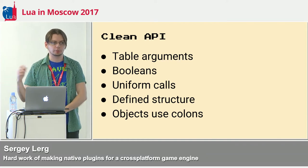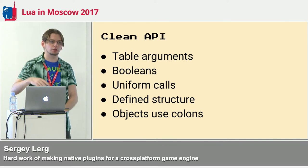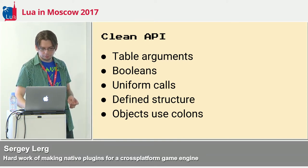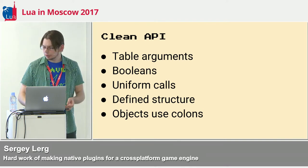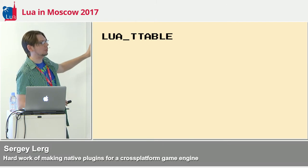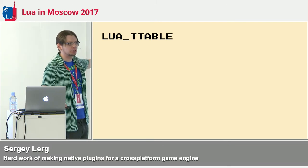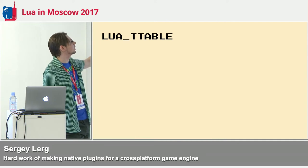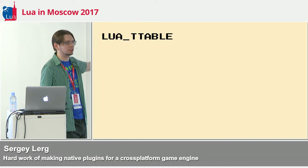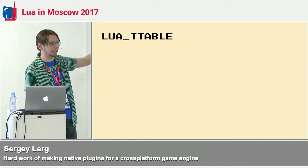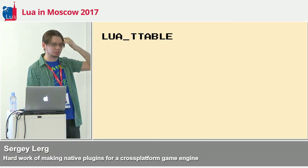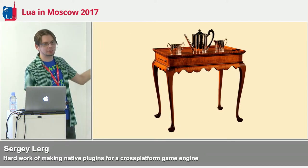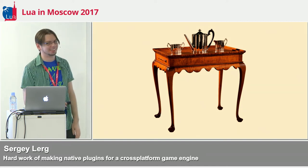When you return objects from the plugin, make sure they accept colon notation for method calls — that way the user knows it's actually an object. In the C API, you have the constant LUA_TTABLE — it defines a type of a table. There's LUA_TSTRING, LUA_TNUMBER, LUA_TUSERDATA, and LUA_TTABLE. Whenever I find it in the code, I always giggle a little because — come on — T table? A table with a T on it? I find it funny.